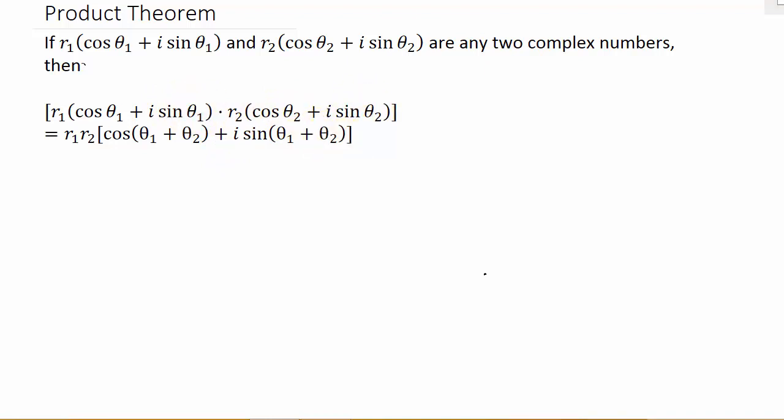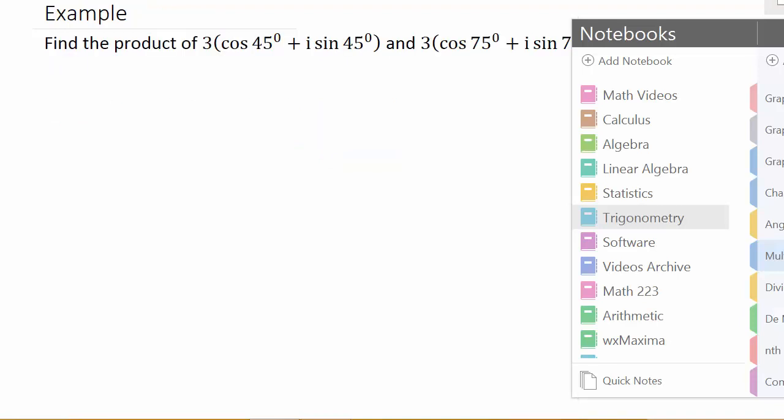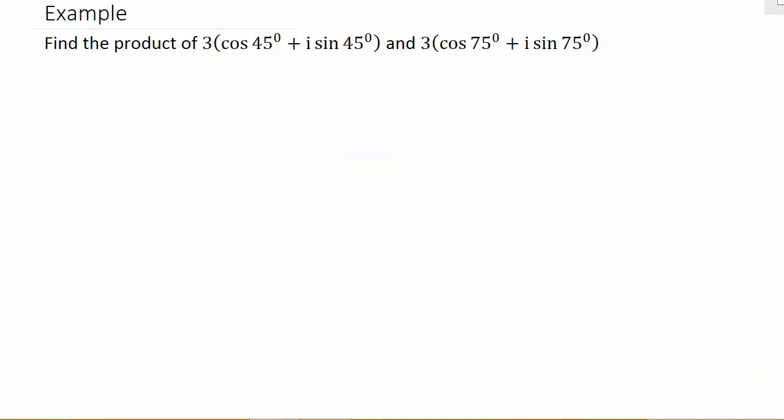Okay, so let's take a look at the example, and they want us to find the product of this. Now, I think what I'm going to do here is change this. I know there's a 3. Let's have a different number besides a 3. Let's just change it to 2 times instead of 3 times.